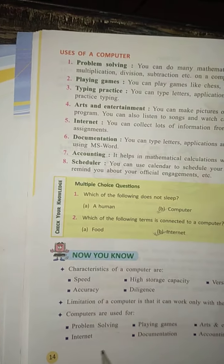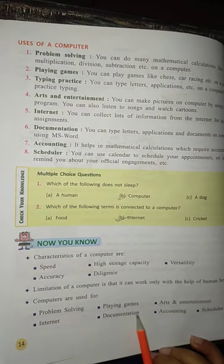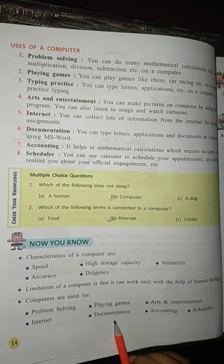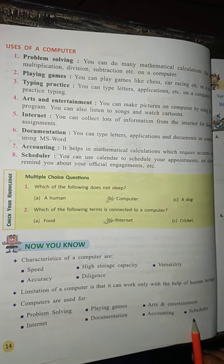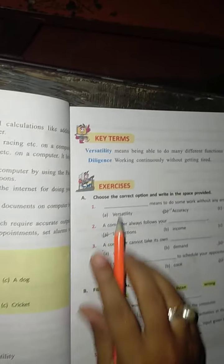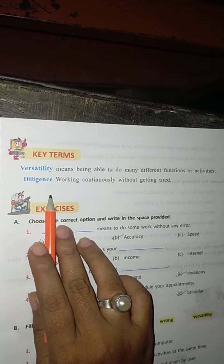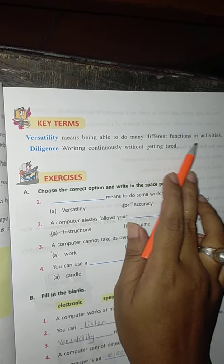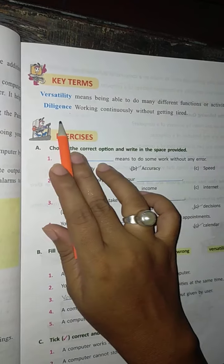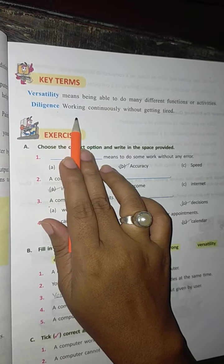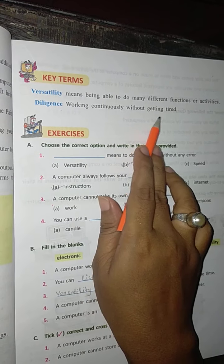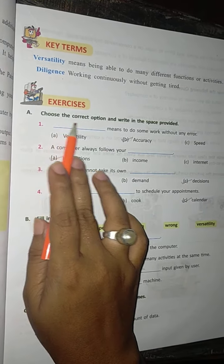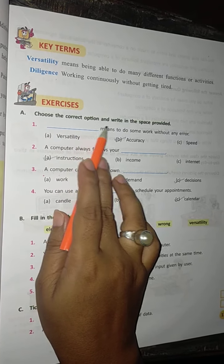Computers are used for problem solving, playing games, art and entertainment, internet, documentation, accounting, and scheduling. Versatility means being able to do many different functions or activities. Diligence means working continuously without getting tired.